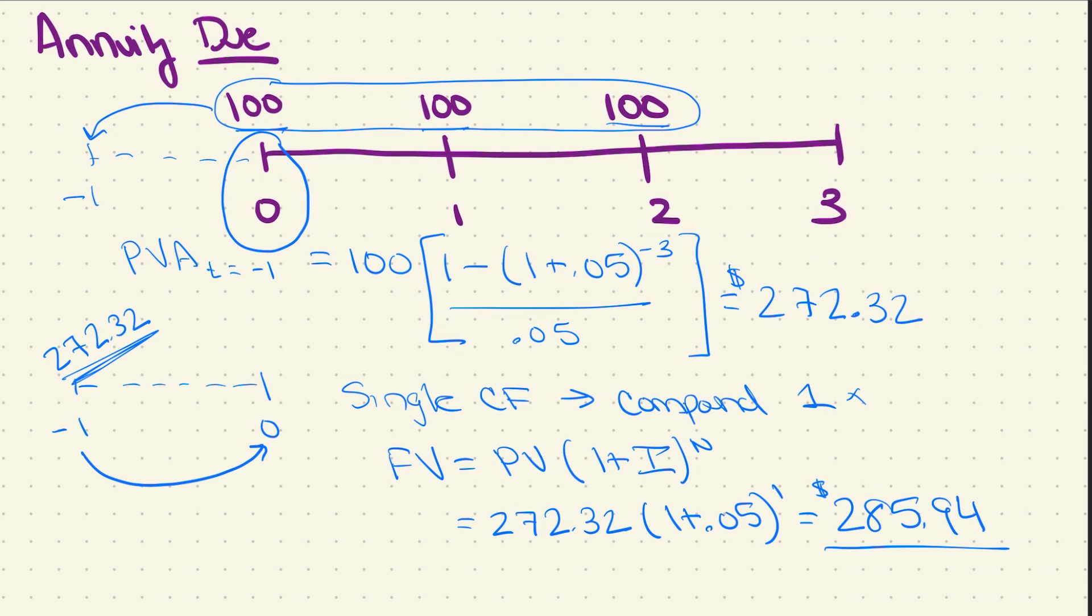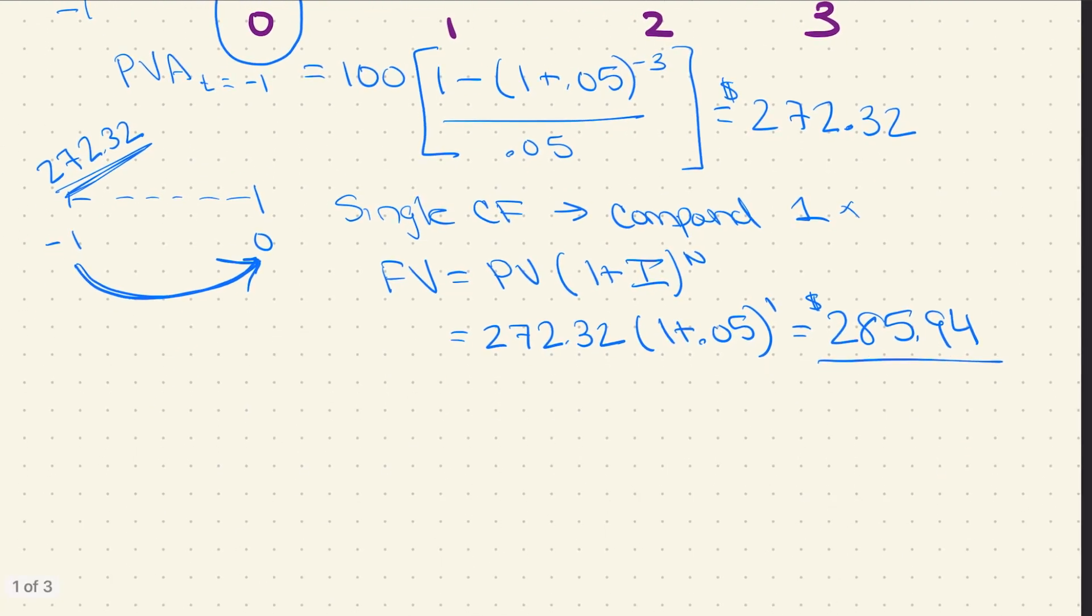So this trick that we just did where we brought it back one time period too far and then we brought it forward again is the exact same trick you're going to do every time it's an annuity due. I could actually generalize this equation and say that the present value of an annuity due is equal to the present value of a regular annuity compounded one additional time.